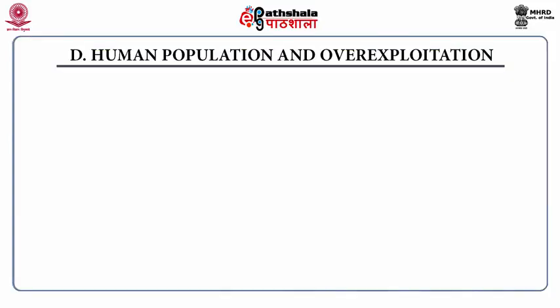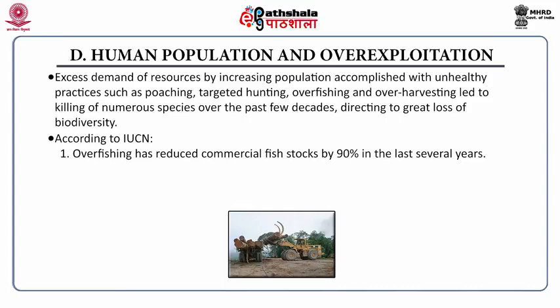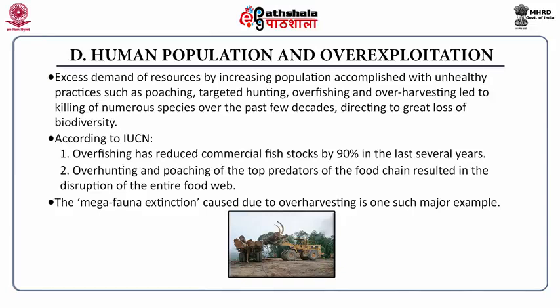Human population and over-exploitation of biodiversity is another major cause of biodiversity loss. Excessive demand for resources by an increasing population, accompanied by unhealthy practices such as poaching, targeted hunting, overfishing and overharvesting, has led to killing of numerous species over past decades. According to IUCN, overfishing has reduced commercial fish stocks by 90% in the last few years. Overhunting and poaching of top predators of the food chain has resulted in disruption of the entire food web. The megafauna extinction caused due to overharvesting is one such major example.